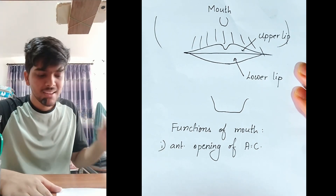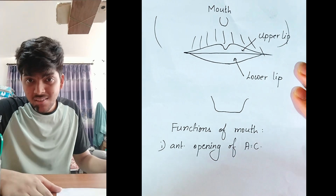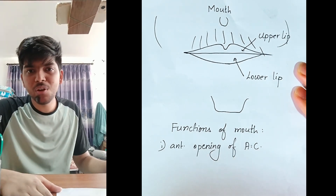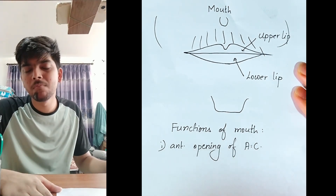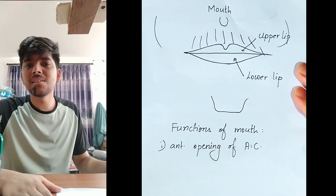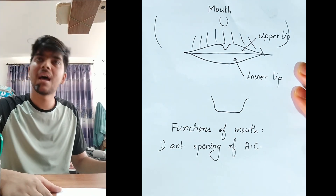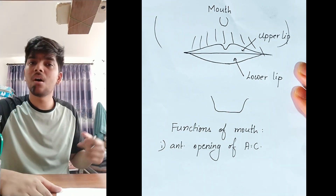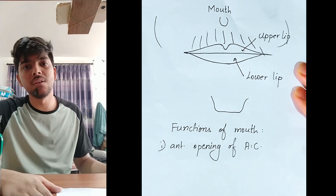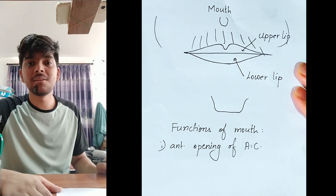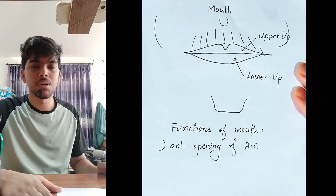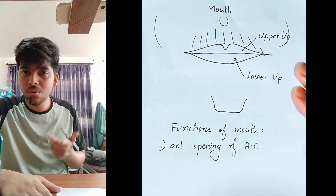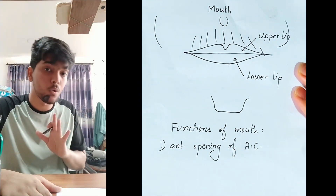Our digestive system has one anterior opening and one posterior opening. Because of these two openings, our digestive system is complete — it is a complete digestive system.